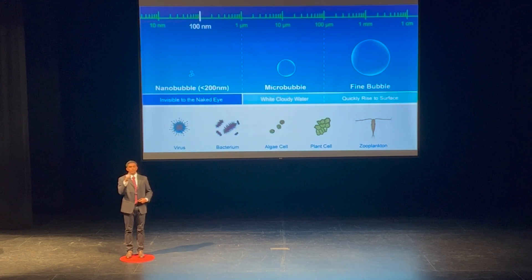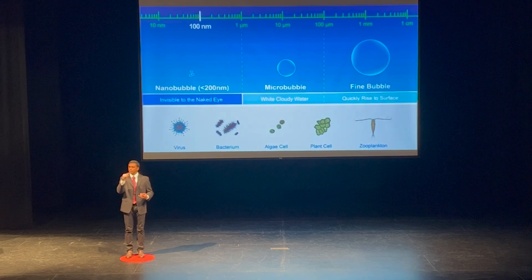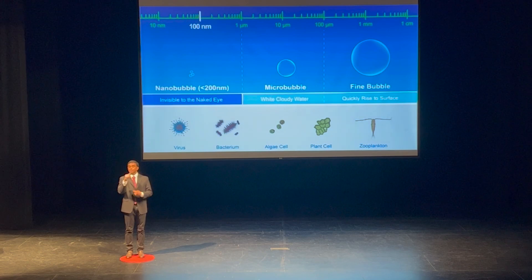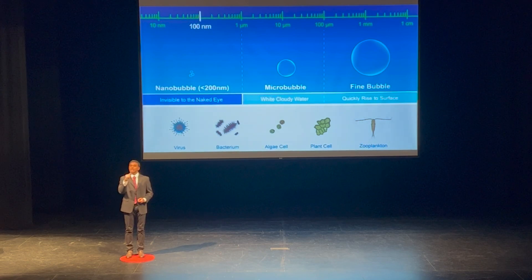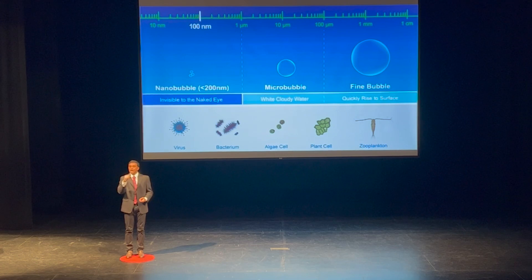Nanobubbles are just really tiny bubbles — essentially tiny vessels of gas, typically found in liquids. Their average diameter ranges from 100 to 120 nanometers by some estimates. To put that into perspective, microbubbles, which are the tiniest type of bubbles that we humans can see, range anywhere from 10 to 1,000 times as large as nanobubbles, which really shows you how incredibly tiny nanobubbles are.